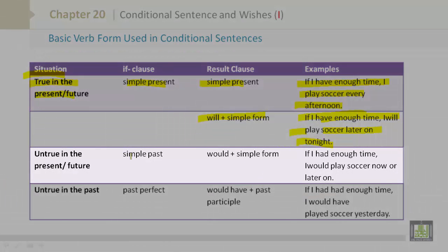Untrue in the present or future: the if clause is simple past. The result clause: would plus the simple form. The example: if I had enough time, I would play soccer now or later on.